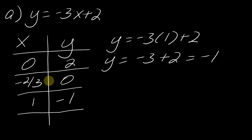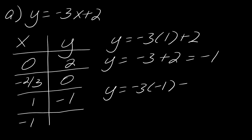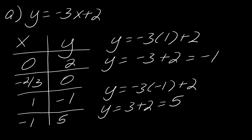Like I said, I don't like the point x = −2/3, so I'm going to make a fourth point. Plugging in x = −1: y = −3(−1) + 2 = 3 + 2 = 5. So I've got the point (−1, 5). Now I have the points I want and I'm going to use (0, 2), (1, −1), and (−1, 5).